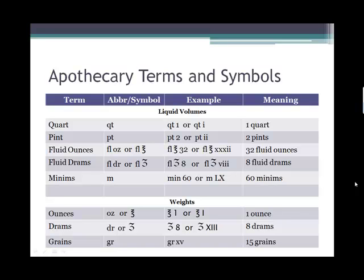Back to the apothecary system. The quarts and pints, we've seen that in household systems, and ounces is very similar, exactly, pretty much the same as the ounces, except they call it fluid ounces here. This is just a table of the systems themselves and what they mean. We're going to look at quarts, pints, fluid ounces, fluid drams, and minims. Minims is the smallest amount in the apothecary system.